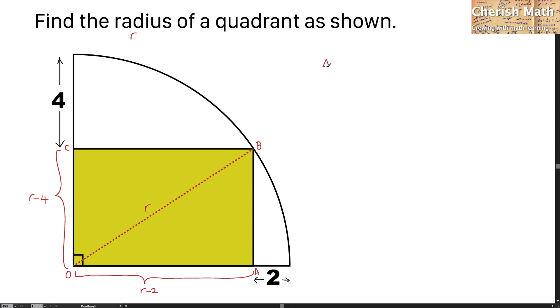I'm referring to triangle OAB. Solving by Pythagoras Theorem: r squared equals (r minus 4) squared plus (r minus 2) squared.